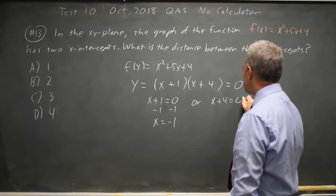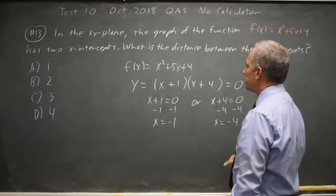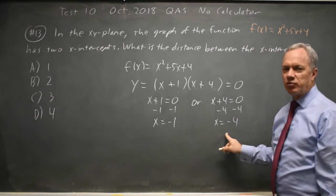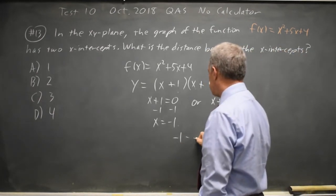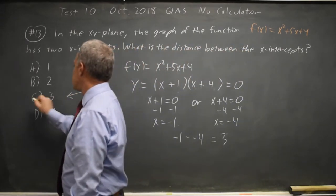x plus 4 equals 0, subtract 4 from both sides, x equals negative 4. The distance between x equals negative 1 and x equals negative 4 is negative 1 minus negative 4 is negative 1 plus 4 equals 3, choice c.